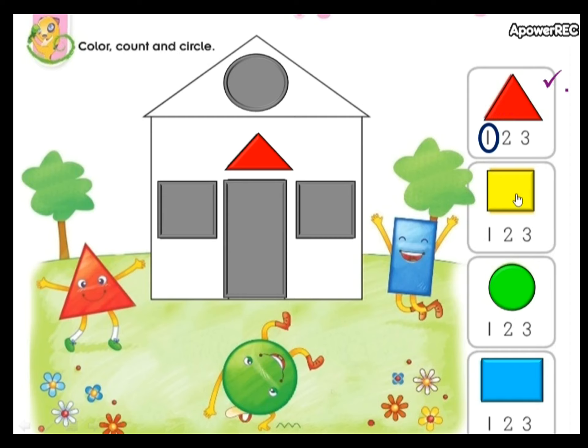Now let's find the squares. When you find them, click on them. One, two. Two yellow squares. Awesome.